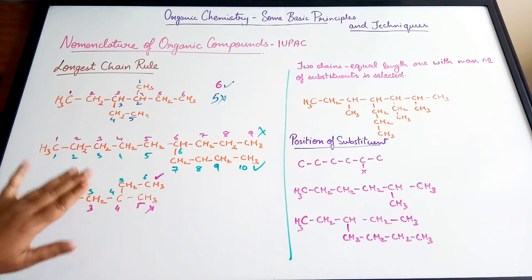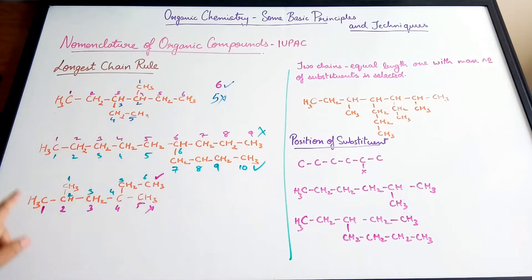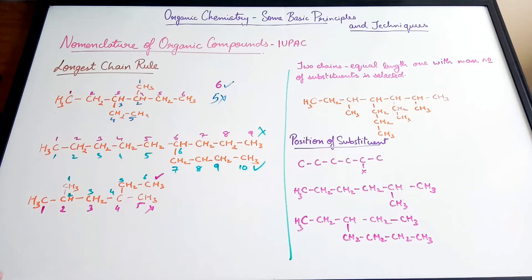The position of the substituent is also followed by a numbering process. This is to show the number of carbon atoms in each chain and the comparison to other possible chains. Now, there is another rule: suppose you have two chains which are possible and both chains have an equal number of carbon atoms — then the one with the maximum number of substituents is selected.